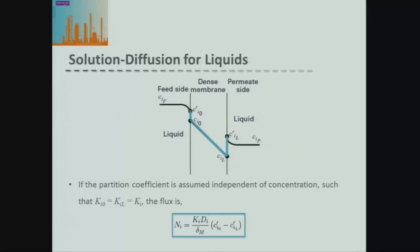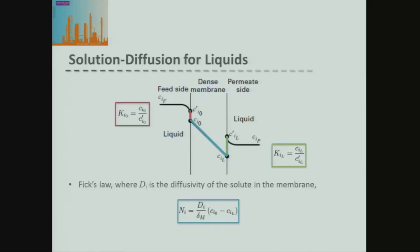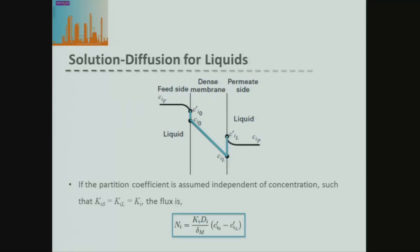Because the absorbed concentrations are generally not easily calculated, we can make the assumption that the partition coefficients on both the feed and permeate sides of our membrane are very similar to each other. That allows us to combine our two equations for the absorption process with our Fick's law equation to get the flux across our membrane in terms of the concentration of the free solution on the surface of the membrane.